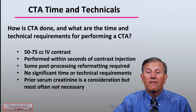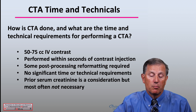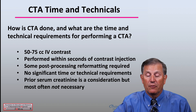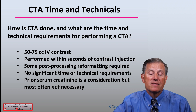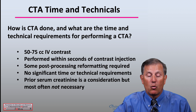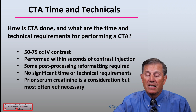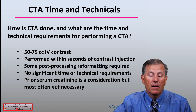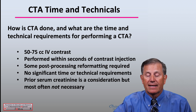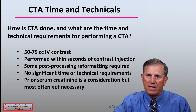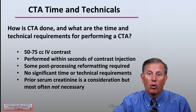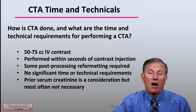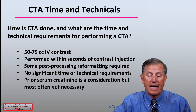It goes from the aortic arch to the cranial vertex and it provides a superior spatial view of the cerebral vessels. How is the CTA done and what are the time and technical requirements? 50 to 75 cc's of IV contrast are provided. It is performed within seconds of the contrast injection. There is some post-processing formatting required, but there's no significant time or technical requirements for this testing. Prior serum creatinine is a consideration for those at risk for severe renal disease or renal failure, but most often in most patients it is not necessary.